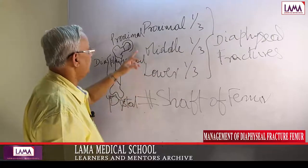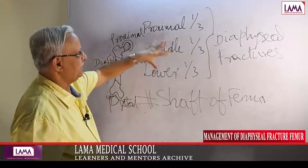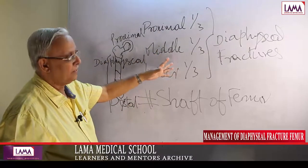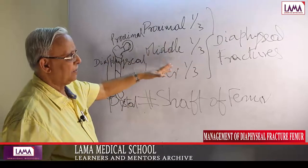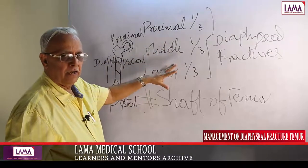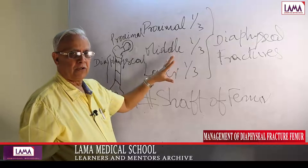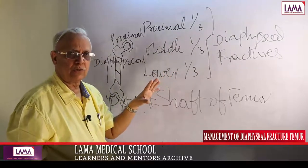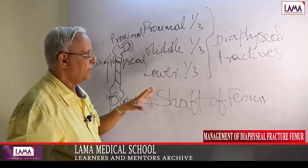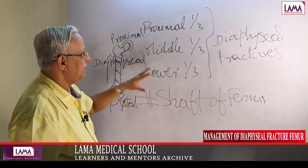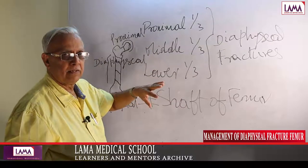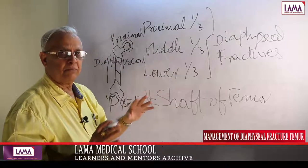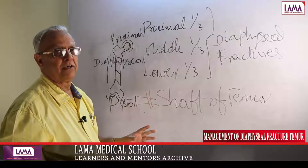These differences occur because of muscle attachments, so you have to classify them. Unless you know the basic anatomy of these fractures, you are not going to be successful. Because of the muscle attachments, the fragments get displaced in different directions.